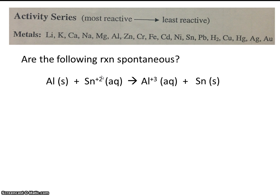So let's check to see if that's the case. Here's aluminum, our metal, and here's tin. Tin is our metal ion, and it's less reactive. So this reaction will be spontaneous.